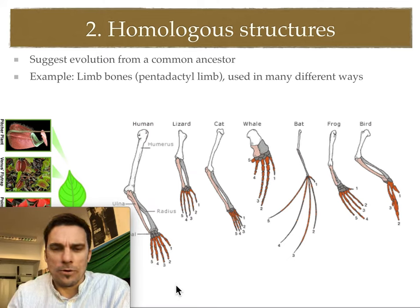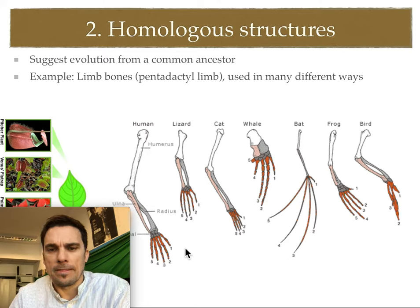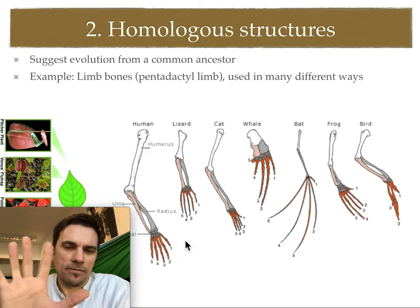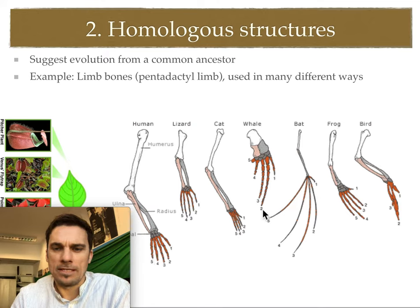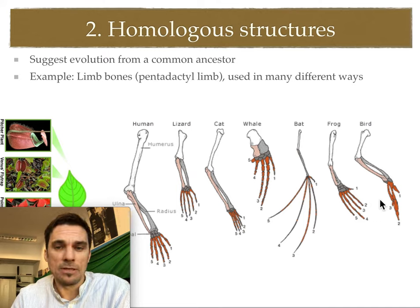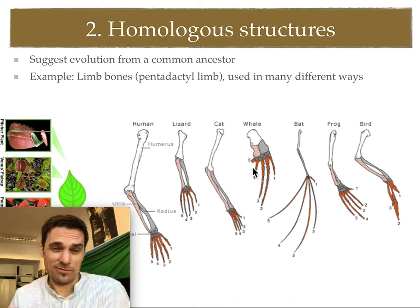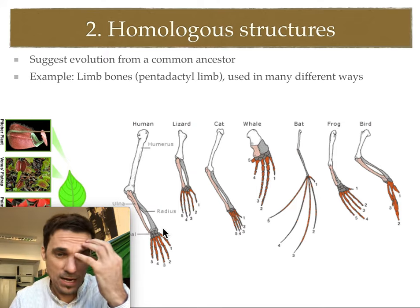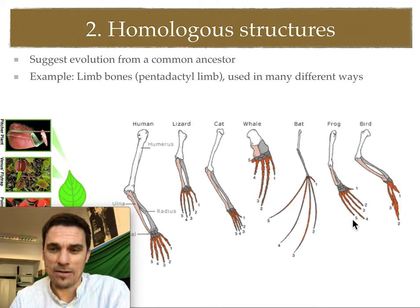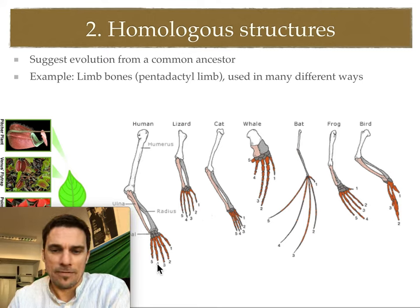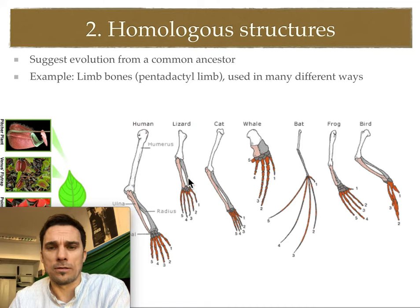Next on the list of evidence for evolution is homologous structures — specifically the pentadactyl limb. 'Penta' means five, and you can see five digits in each of these pictures. The pentadactyl limb is a wonderful piece of evidence showing similarity between species that are so different. It suggests there must be some common ancestor linking these things. A five-fingered human with ulna and radius, a lizard with ulna, radius, and humerus.